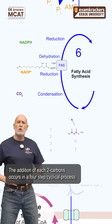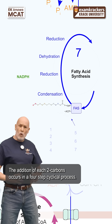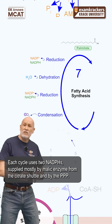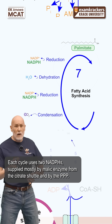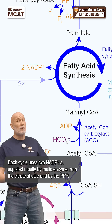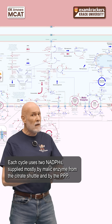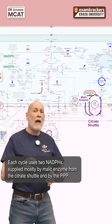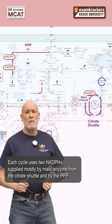The addition of each two carbons occurs in a four-step cyclical process. Each cycle uses two NADPHs, supplied mostly by malic enzyme from the citrate shuttle and by the PPP.